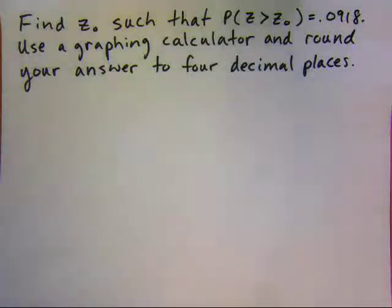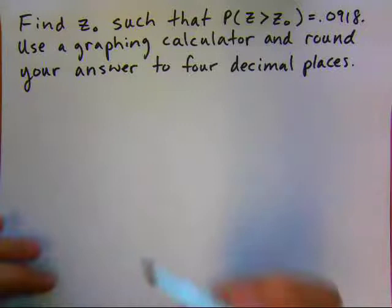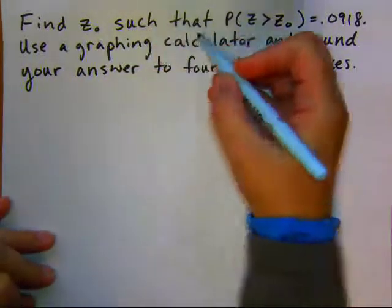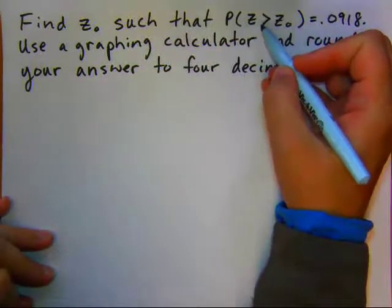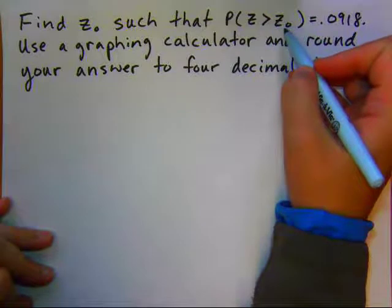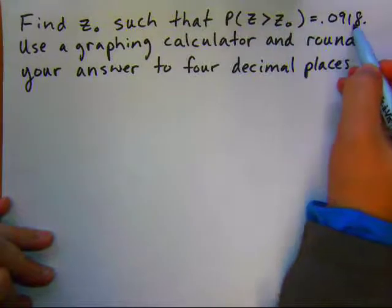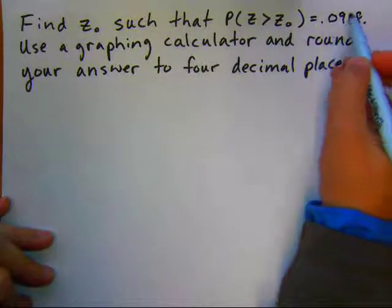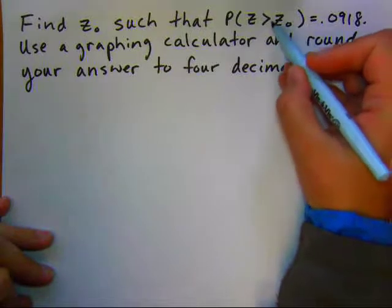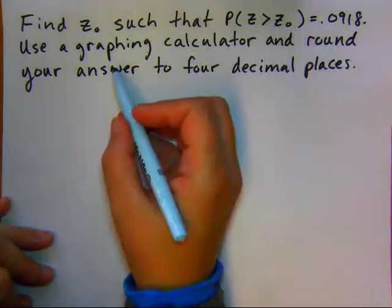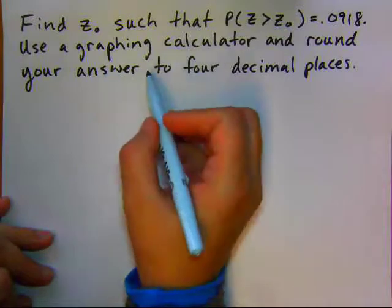Here is an example on using the inverse normal distribution function on your TI-89 calculator. The problem we have is find Z-naught such that the probability of Z is greater than that value of Z-naught equals 0.0918. So we're given a probability and we're trying to find this Z-score. We want to use a graphing calculator and round your answer to four decimal places.